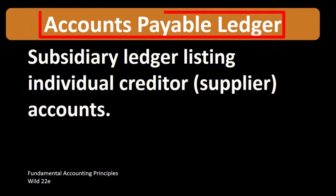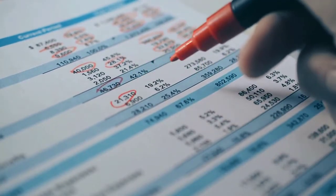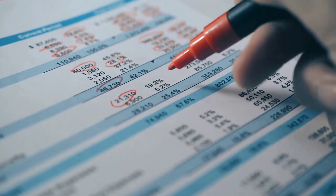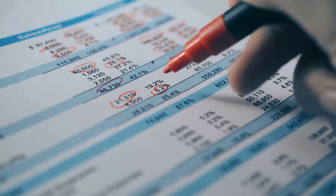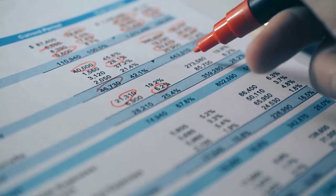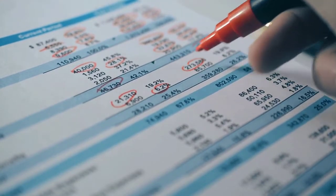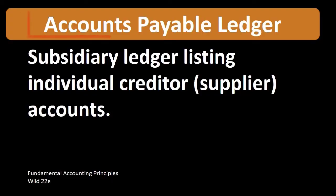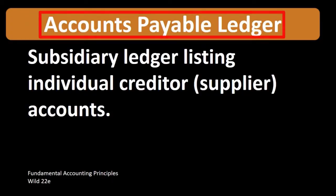The accounts payable ledger can be thought of as a backup to the amount that would be on the balance sheet or the trial balance in the accounts payable account.